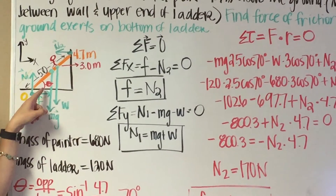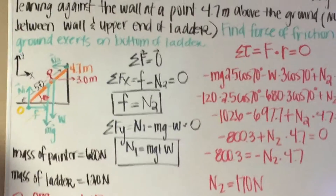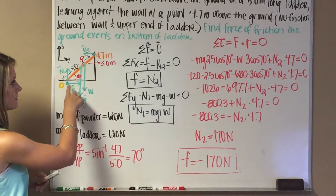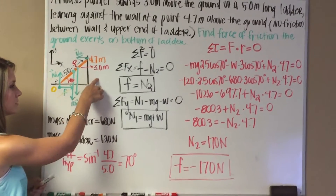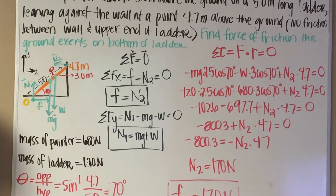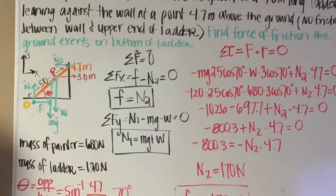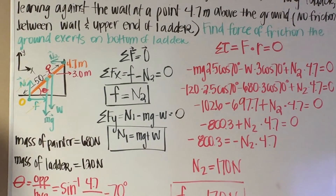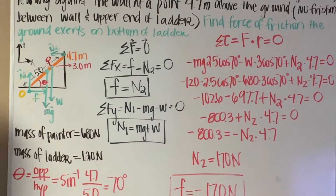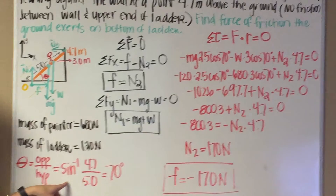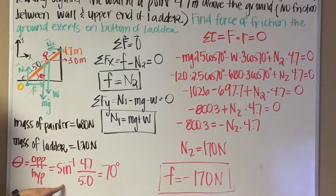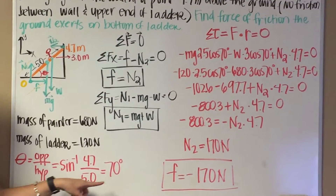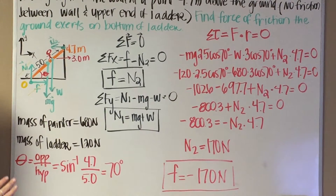We don't know angle theta, so we're going to have to find it. The problem gives us the opposite side and the hypotenuse, but not the adjacent side. So we use the formula for sine, which is opposite over hypotenuse. Using the inverse sine of 4.7 over 5.0 meters in our calculators gives us an angle of 70 degrees.